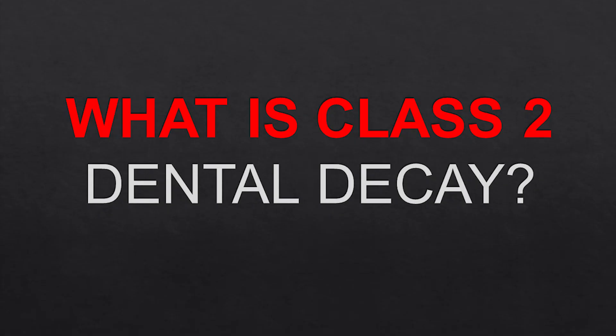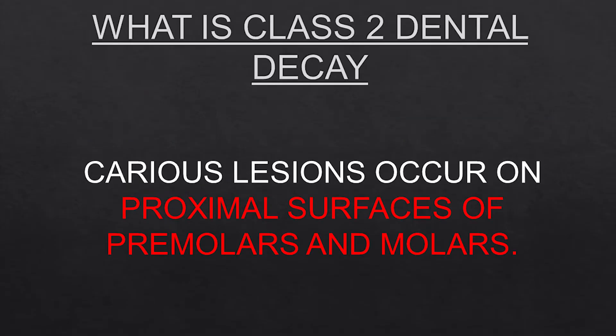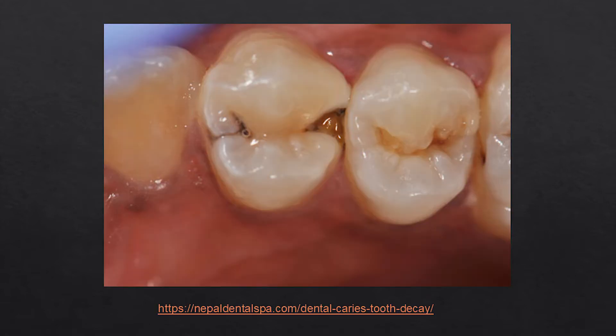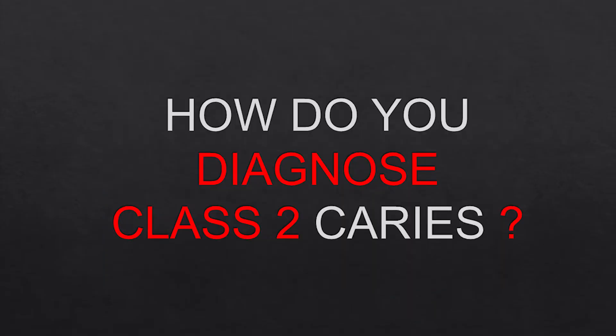Coming to the definition of class 2 cavity preparation as per the textbook: it is a carious lesion on the proximal surfaces, but only on premolars and molars. If it is on anteriors, it does not belong to class 2. The proximal surfaces are mesial and distal. As you can see in this picture, the decay involves the proximal area and also progresses onto the occlusal surface.